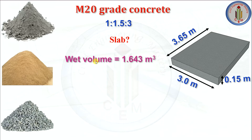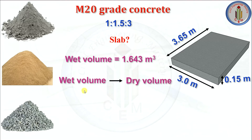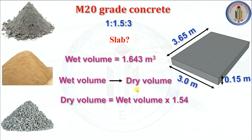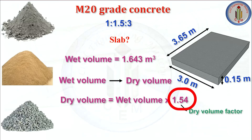The volume we calculated is the wet volume — that is the concrete quantity. But whenever we go to buy the material, we buy it as dry material, not wet material. So we need to convert this wet volume to dry volume. Dry volume is equal to wet volume multiplied by 1.54. I'll explain why we need to consider 1.54 as the dry volume factor.